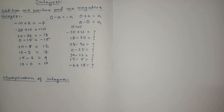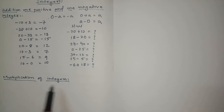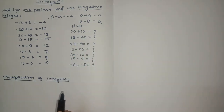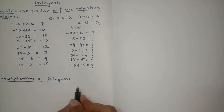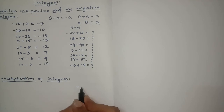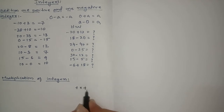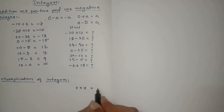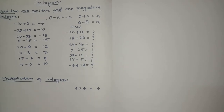Next topic: multiplication of integers. First we will see what happens when we multiply signs. Suppose we are multiplying a plus value into a plus value — we get the answer as plus.